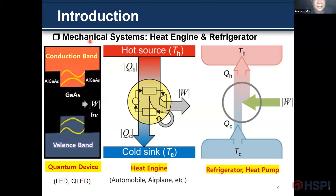This is a typical mechanical system: a heat engine and a refrigerator. A heat engine supplies heat from the hot source and transports it to the cold sink, generating some work in the process. On the other hand, a refrigerator transfers heat from the cold source to the hot source, receiving work in the process.